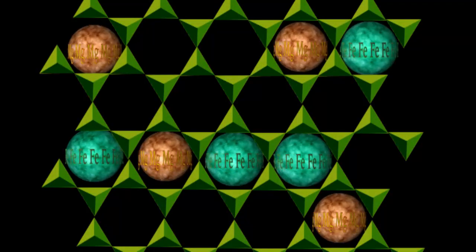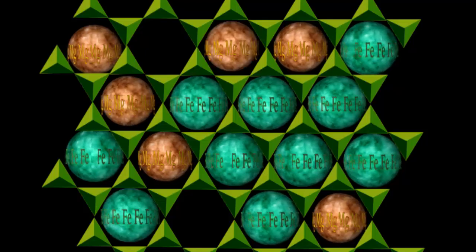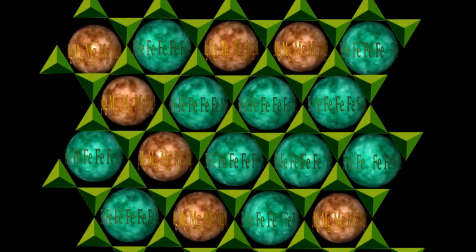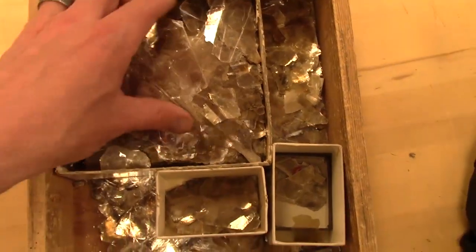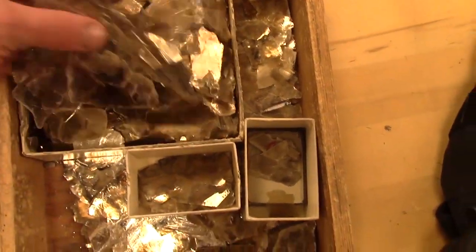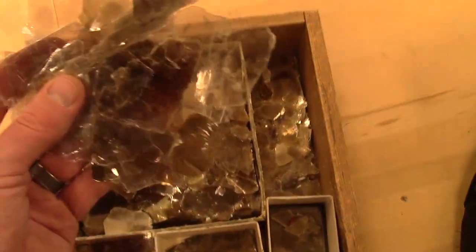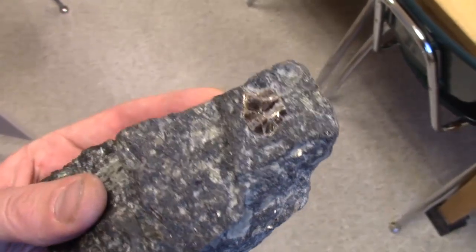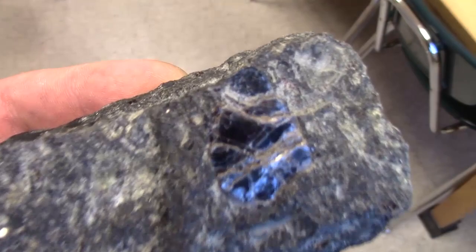Because magnesium can swap out for iron in the structure, we get a series going from the more common iron-rich black biotite to magnesium-rich brown to golden colored phlogopite. Biotite is more often associated with intermediate to felsic igneous rocks, whereas phlogopite shows up more with olivine, pyroxene, and amphibole mafic rocks.